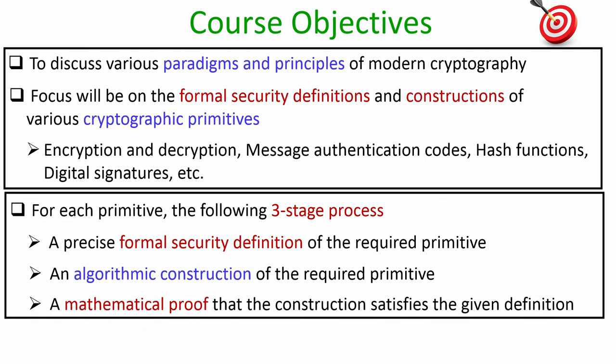You can compare this three-stage process with the following example. If you want to build a house, you will first come up with a rough architecture of the house and you will have the map of the house which you give to your engineer — that is stage one. Once the map is ready, during stage two the engineer will involve some workers and helpers to come up with the building — that is the algorithmic construction. And in stage three, once the building is ready, you will verify that the construction the engineer has come up with indeed satisfies the architecture specified during stage one. That is the three-stage rigorous process we are going to follow in this course for each of the cryptographic primitives.